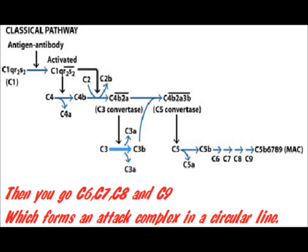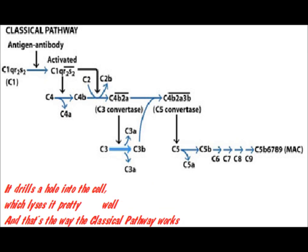And it'll go C6, C7, C8, C9, which forms a MAC complex in a circular line. Oh, it drills a hole into the cell, which lyses it pretty well. And that's the way the classical pathway works.